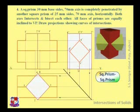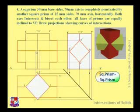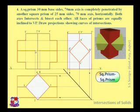This straight line cuts this square over here. From this point draw a vertical line, and this horizontal line will cut over here, giving another intersection point.